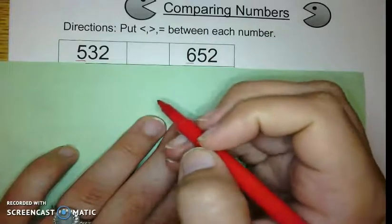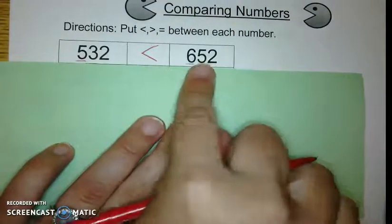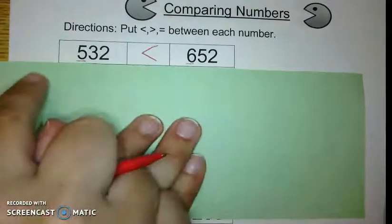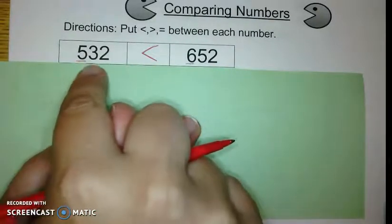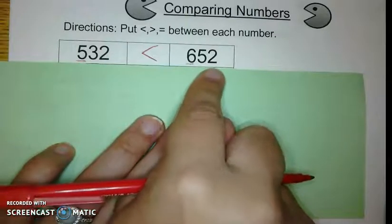So that means that I would put the less than symbol in. And that means that the wide open mouth is going towards the bigger number. Now this is the less than because I read it like this. 532 is less than 652.